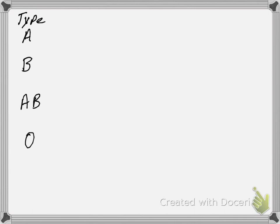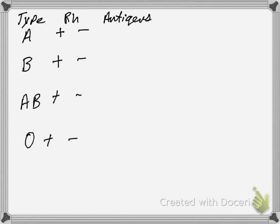So this is your blood type, and then you could have your RH factors on top of it. It's possible to have both positive and negative for all of these. So what that means is that the antigens on A positive would be A's and RH — that would give you A positive. But if you're A negative, A only is what would get you A negative. It's going to be the same for B, AB, and O.